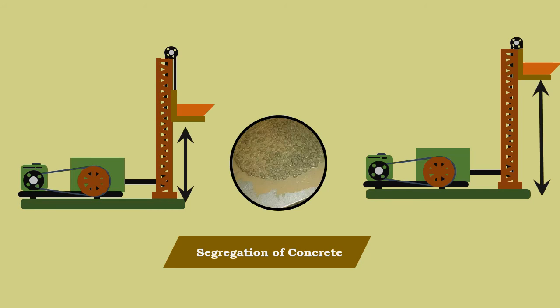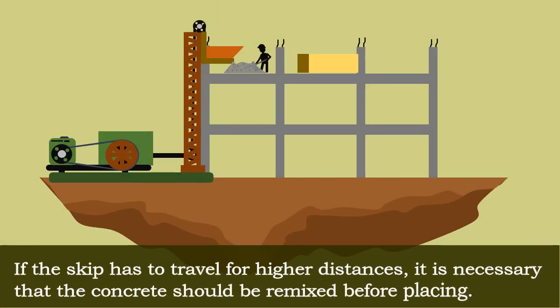The occurrence of segregation of concrete depends upon the extent of travel and rolling over the rails. If the skip has to travel for higher distances, it is necessary that the concrete should be remixed before placing.